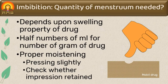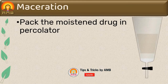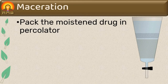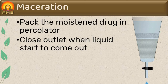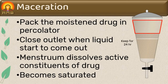Next step is maceration. Before maceration, the imbibed drug is packed into the percolator systematically. After packing, sufficient quantity of menstruum is added to saturate the material. When liquid starts coming out of the percolator, the outlet is closed, then sufficient menstruum is added to leave a layer above the drug. The drug is kept in contact with menstruum for 24 hours, during which the menstruum solubilizes the active constituents and becomes almost saturated.